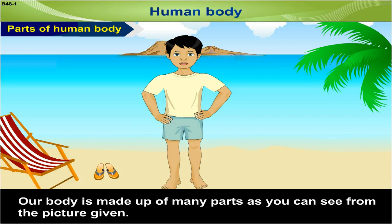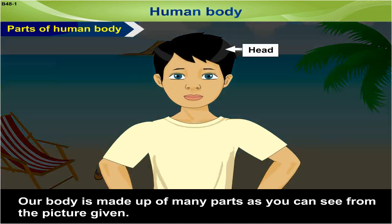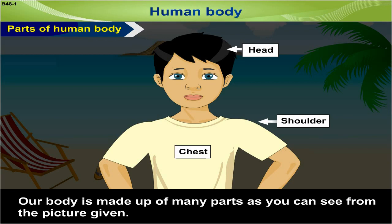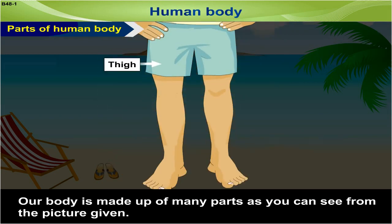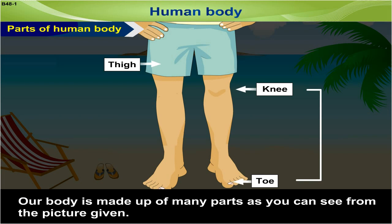Our body is made up of many parts. As you can see from the picture: the head, shoulder, chest, arm, hand, thigh, knee, and toe, which together form the leg.